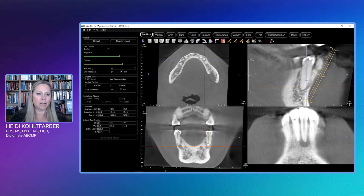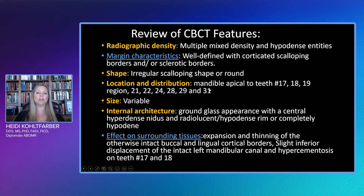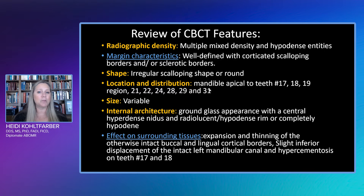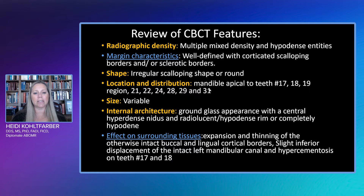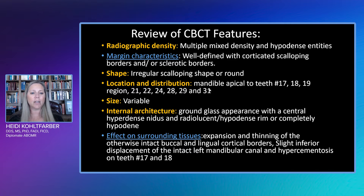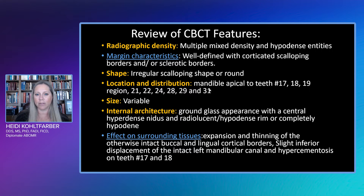Let's pop up our PowerPoint and finish going through that. When looking at all our features and radiographic signs, we have multiple mixed density and hypodense entities, well-defined with corticated scalloping borders and sclerotic borders. The main lesion has an irregular scalloping shape, and that would be bilateral as well. Looking at location and distribution, we've got quite a lot of areas: teeth 17, 18, 19 region, the edentulous 19 region, 21, 22, 24, 28, 29, and 31 — a huge scope where we're seeing these mixed density entities, and the size is variable.